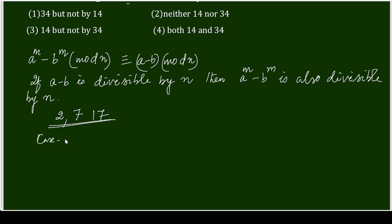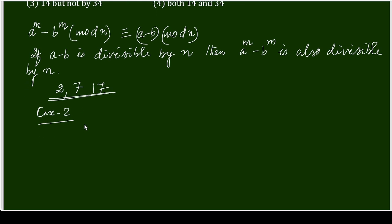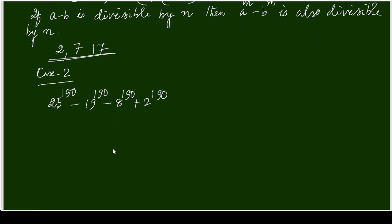First, checking divisibility by 2. Let me rewrite the expression by rearranging: (25^190 minus 19^190) minus (8^190 minus 2^190). They have the same exponent m = 190.